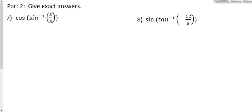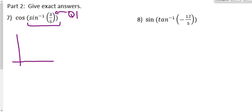Now we move on to part 2. These are a little more involved and don't necessarily involve 30-60-90 or 45-45-90 triangles. We start with the inside part: the inverse sine of 3 fifths. Since 3 fifths is positive, we're going to be in quadrant 1. Draw a reference triangle and put 3 on the opposite and 5 on the hypotenuse.